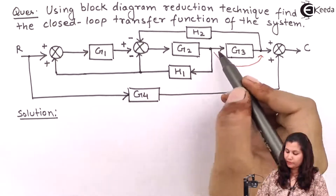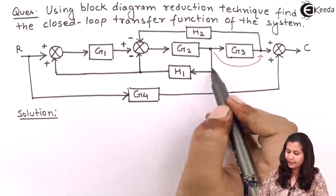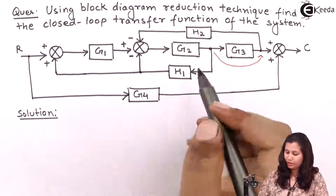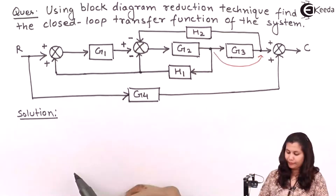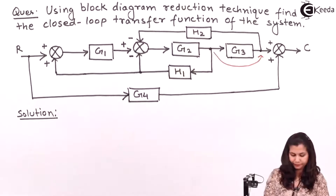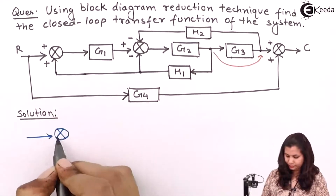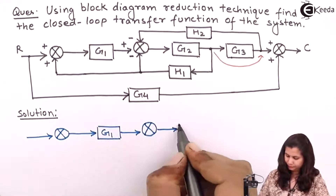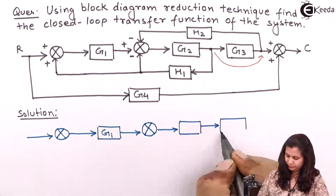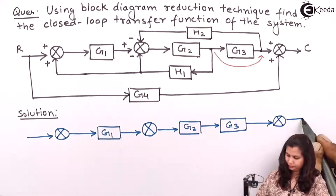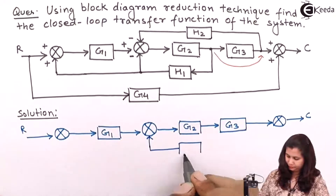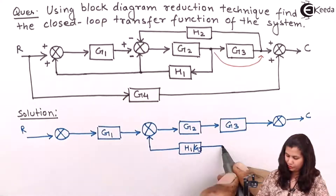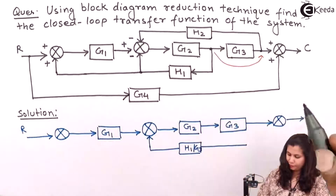H1 here — we move this takeoff point and the transfer function will be changed to H1 divided by G3. This will become H1 by G3 and the takeoff point will come here after the block.